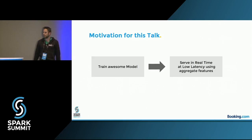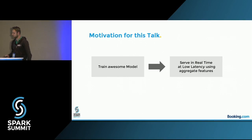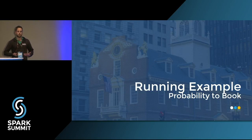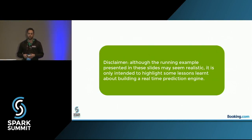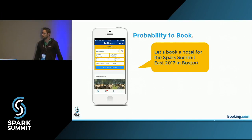What I'm going to talk about today is how you go from training your awesome model to serving it in real time at low latency using aggregate features. This aggregate features topic I haven't seen much of concretely in previous talks. So here's the running example. What I hope you take away is: when do we want to predict? And what are the three main features we'll use. Disclaimer: although it looks realistic, this is not necessarily something we actually do — it's just an example to highlight the important points.